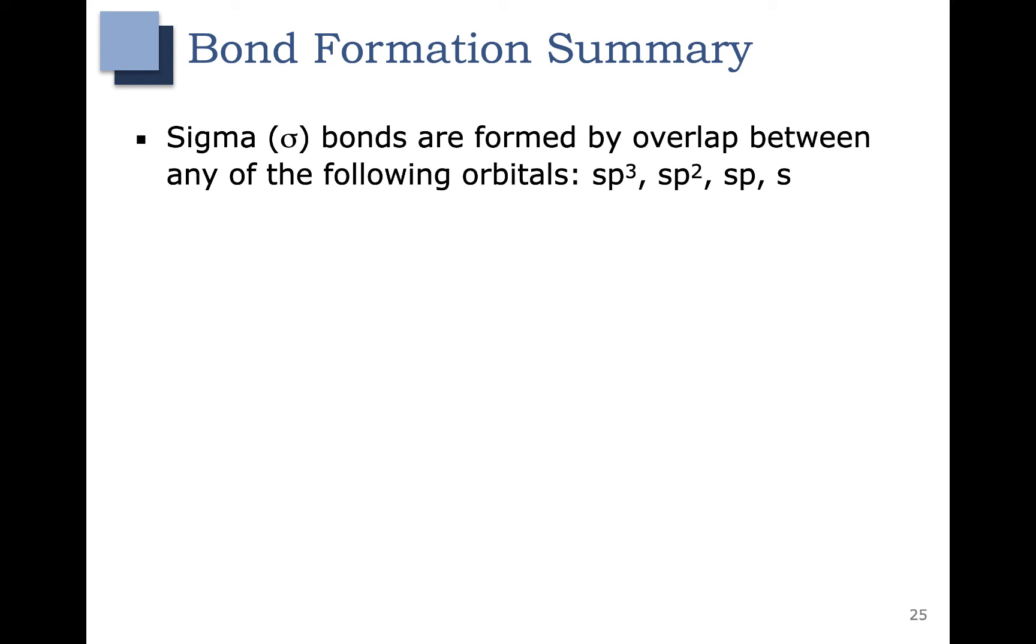Here's a quick summary on what we've learned about bond formation. Sigma bonds are formed by overlap between sp3, sp2, sp, or s orbitals. Pi bonds are formed by overlap of two p orbitals.